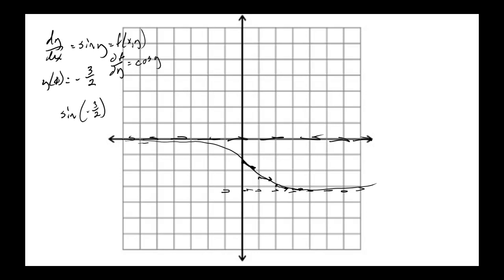Notice we can't cross the lines where slope equals 0. You can't go up here because slopes are 0 at y = 0 and at y = −π (approximately −3.14). So we're reaching horizontal asymptotes — you'll never get y greater than 0 or less than negative π. We're stuck in that range.